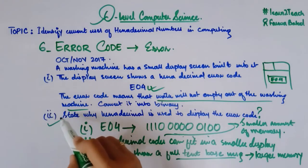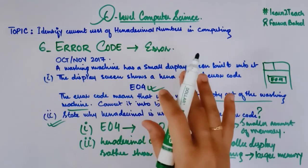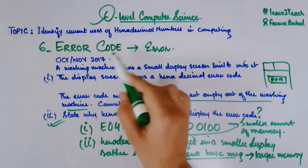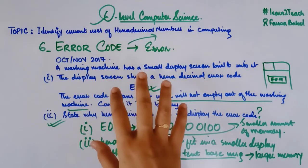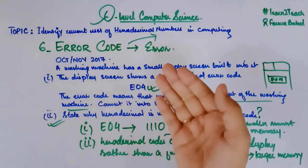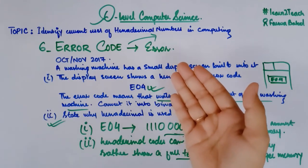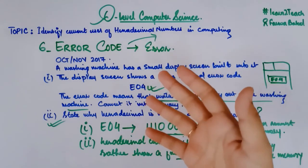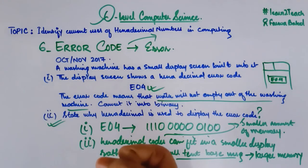So this is all about this video. I have shared how error codes can be written as hexadecimal numbers and the reasons why hexadecimal is used. I hope this is all clear to you. Thank you so much for watching — please share it with your colleagues and friends, like it, subscribe to the channel, and stay tuned for more videos. See you in the next video where I'll be starting the next topic after hexadecimal.